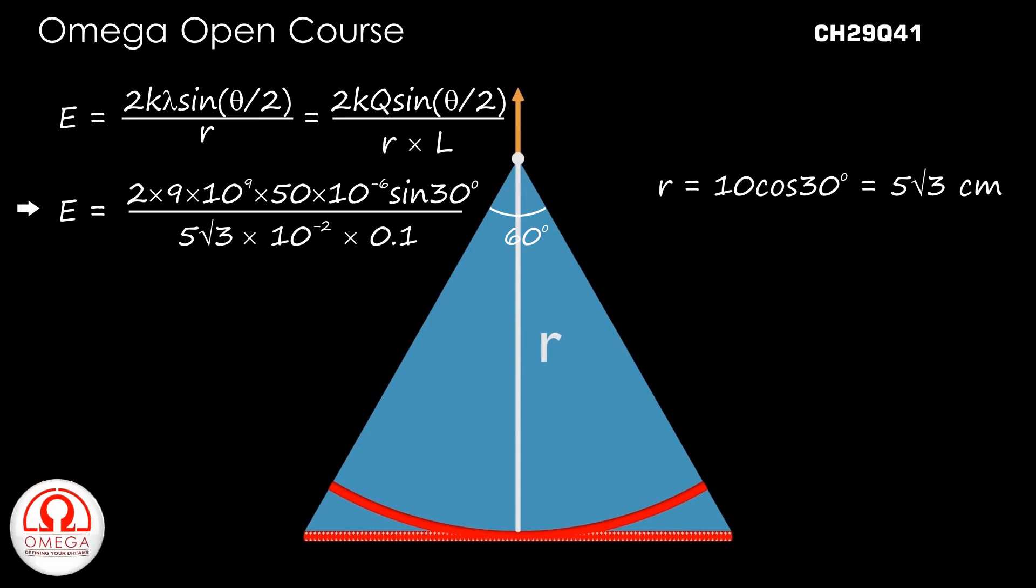Putting sin 30 degree is equal to 1 by 2 and simplifying, we get E is equal to 5.2 into 10 to the power 7 volts per meter. This is our answer.